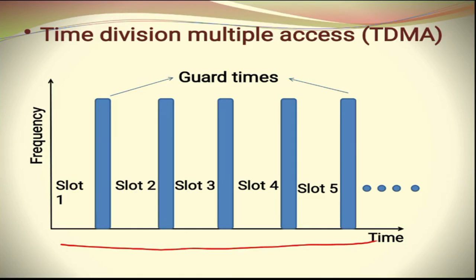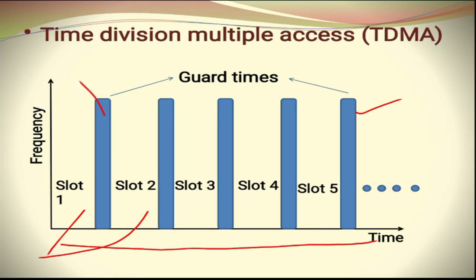In order to avoid interference between adjacent time slots, guard times are introduced. These blue vertical lines are used to avoid crosstalk and interference between neighboring time slots. For example, to avoid crosstalk and interference between slot one and slot two, this guard time is introduced between them.